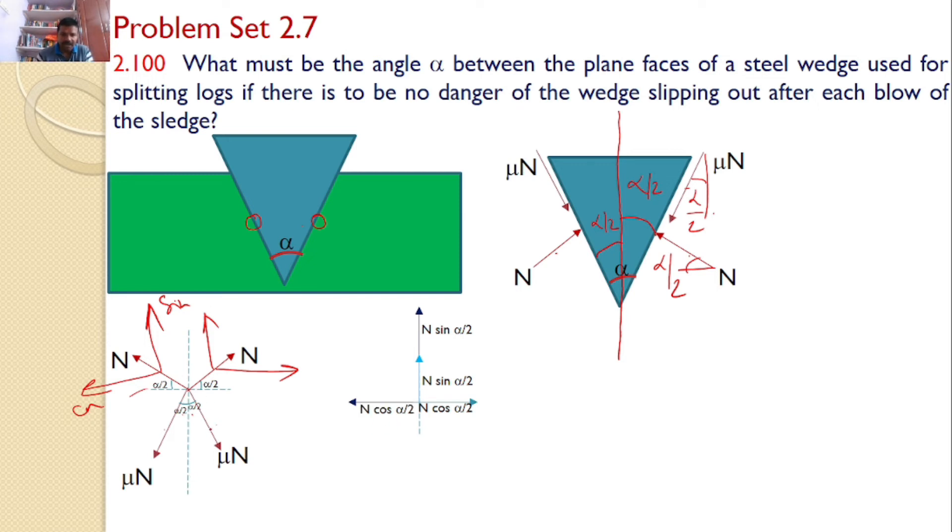Same is the case with mu N. So mu N force, this force I can resolve like this. One force is like this and another force is like this, and this vertical component is cos alpha by 2 and horizontal component is sin alpha by 2. And finally mu N you can resolve like this and those two components of the forces are like this, and the magnitudes are given by mu N sin alpha by 2 and mu N cos alpha by 2.